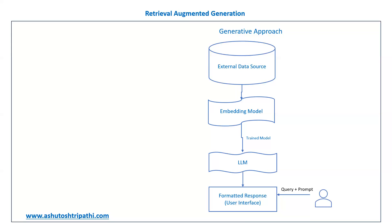There are many limitations of this generative approach. The first and important one is that the model is not updated to the latest information. When your query interacts with an LLM, that LLM is trained only up to a particular date. Whatever LLM model you are using behind the scenes will be trained up to a specific cutoff date.